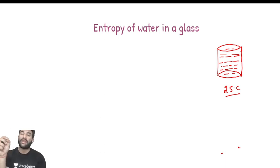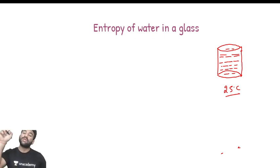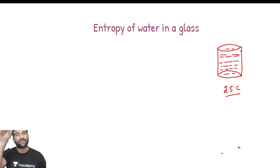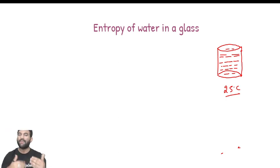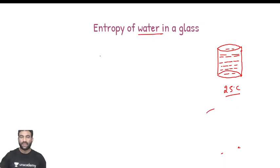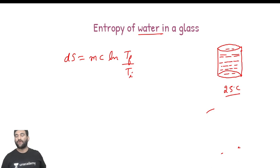But here the question is asking us to find out the entropy of water at a particular state - not the entropy change. The question gives a particular temperature: 25 degree centigrade. Since water is a liquid, the entropy change formula is: dS = mc ln(T_final / T_initial).